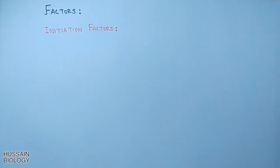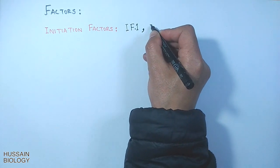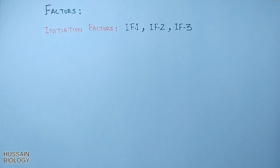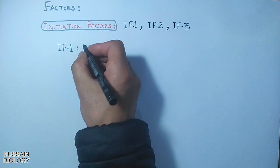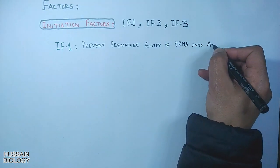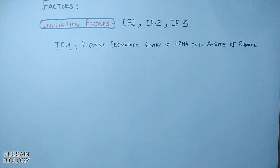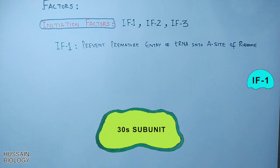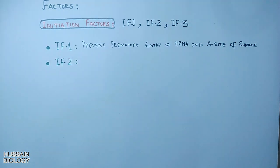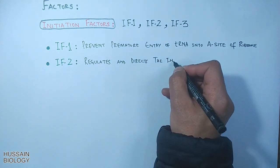In prokaryotes there are three initiation factors: IF1, IF2, and IF3. Initiation factor 1 prevents premature entry of tRNA into the A site of the ribosome — as shown in the diagram, IF1 gets attached to the 30S subunit of the ribosome. Initiation factor 2 regulates and directs the initiator tRNA to its correct position in the initiator complex.